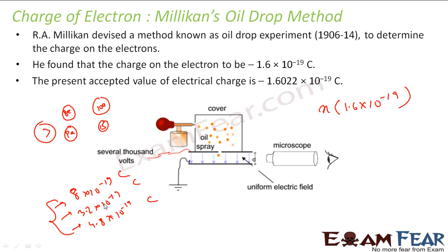I mean this is not the exact value, but he always got multiples of 1.6 into 10 to the power minus 19. And he knew that there can be any number of electrons in the oil drop which you don't know. But since he had so much data, he could tell that the common value was this and he concluded that